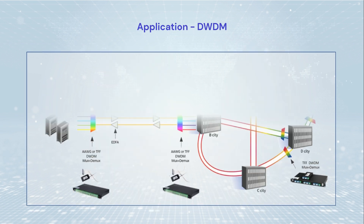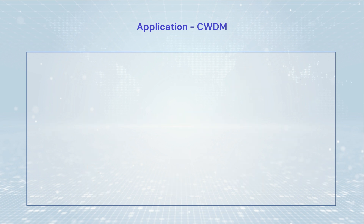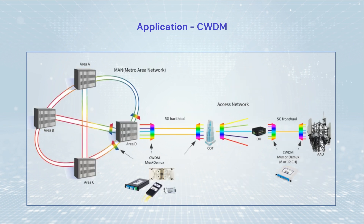DWDM is suitable for long-distance, high-capacity trunk networks, or ultra-large-capacity metropolitan area network core nodes. DWDM is also used in metropolitan area network access layers, telecommunications, enterprise networks, campus networks, and more.